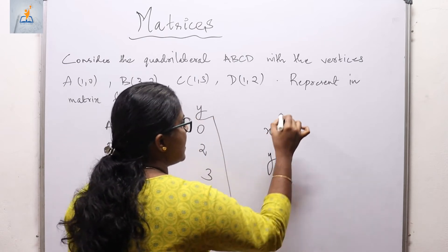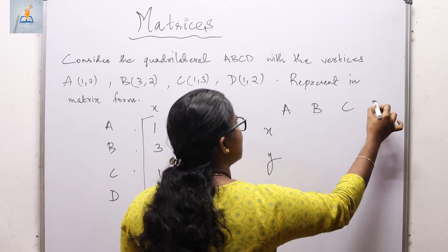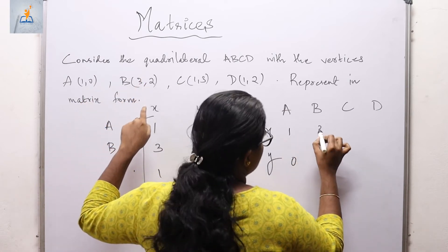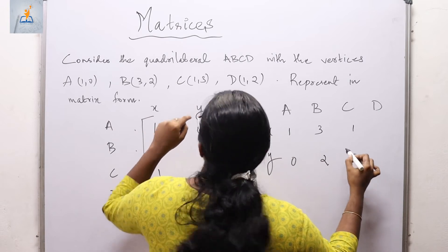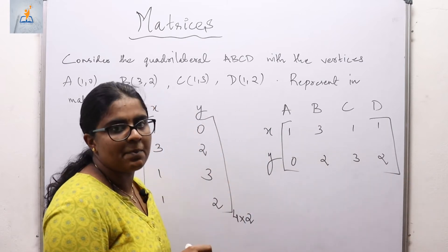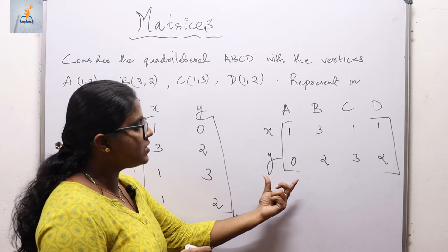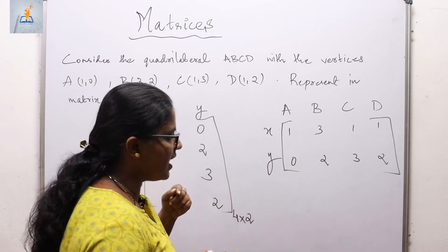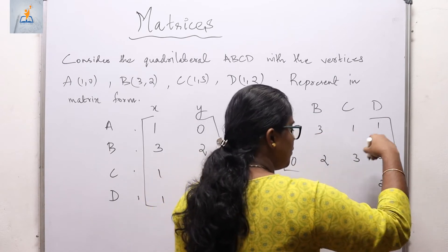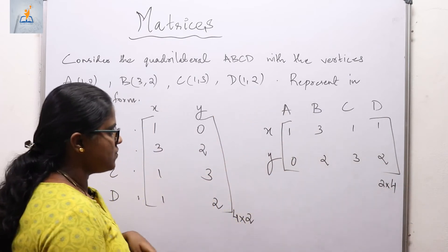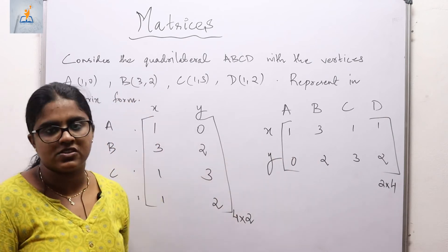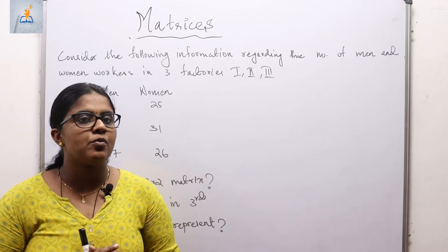Alternatively, we can choose the x and y coordinates as rows and the vertices as columns. So we have: for A — 1, 0; for B — 3, 2; for C — 1, 3; for D — 1, 2. This rectangular representation is also valid. This matrix has 2 rows and 4 columns, making it a 2 by 4 matrix. Both matrices represent the same situation.